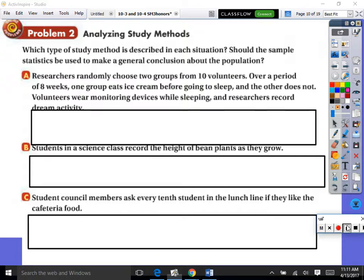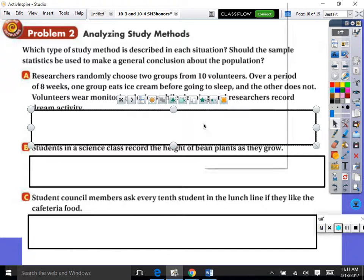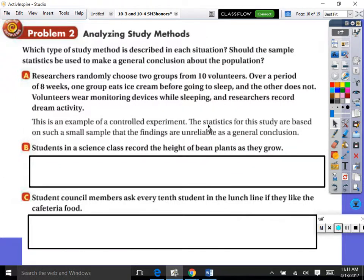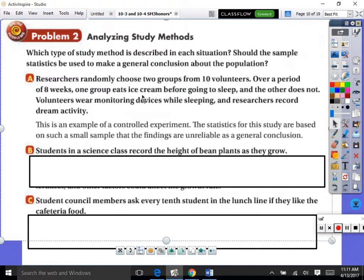So it says, which type of study method is described in each situation? Researchers randomly chose two groups from 10 volunteers. Over a period of eight weeks, one group eats ice cream before going to sleep and the other does not. Volunteers wear monitoring devices while sleeping and researchers record the dream activity. So what kind of study was this? Let's see if you're right. This is an example of a controlled experiment. The statistics for the study are based on such a small sample that the findings are unreliable as a general conclusion. So wasn't this a self-selected sample? Just making sure.